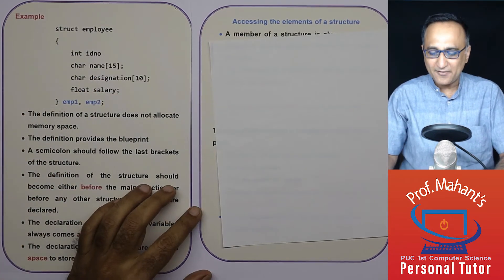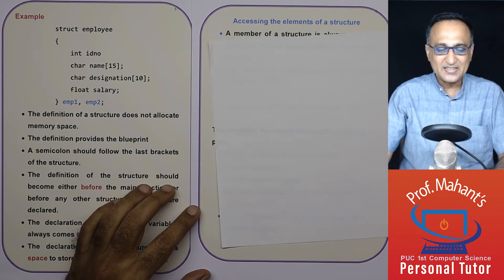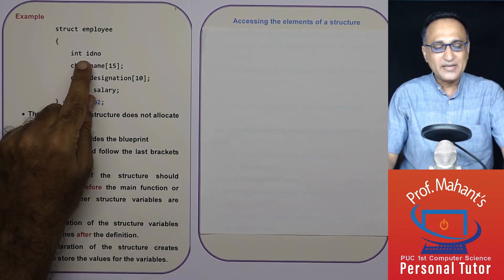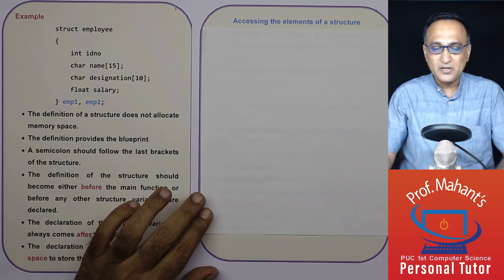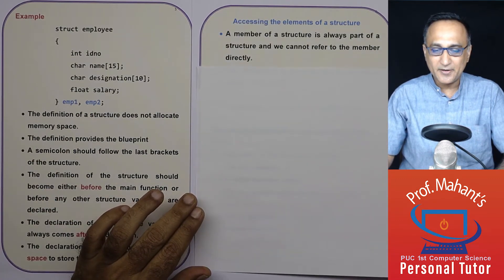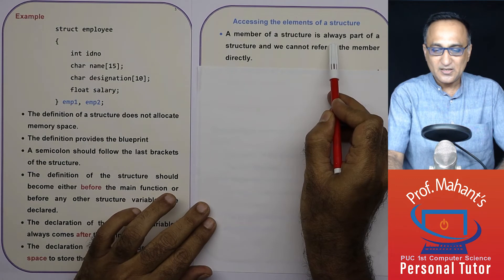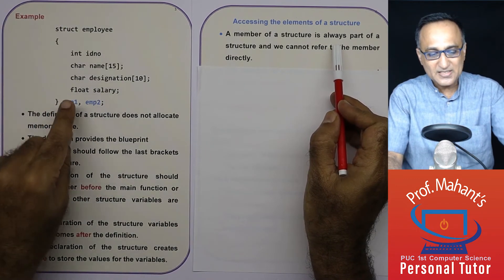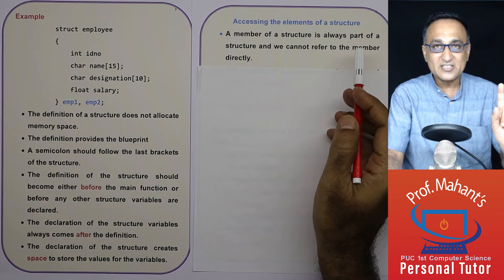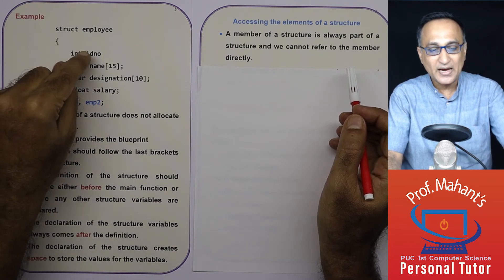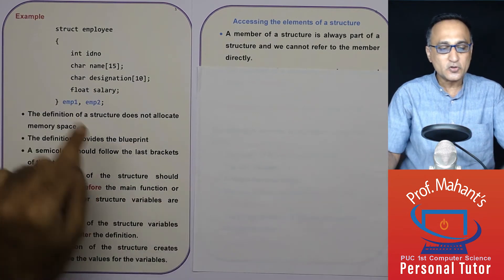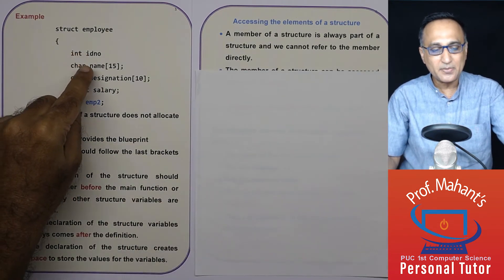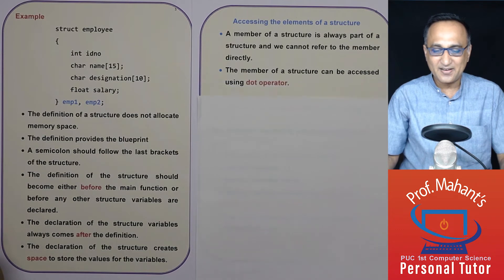Now let us look at how we can refer to or access the individual members. Normally, if it were a simple int ID number, I could directly say ID number. But now I can only refer to them through EMP1 or EMP2. A member of a structure is a part of EMP1 and does not have its own existence — there is nothing called ID number on its own. It has a value because it belongs to EMP1. So we cannot refer directly to ID number, name, designation, and salary.